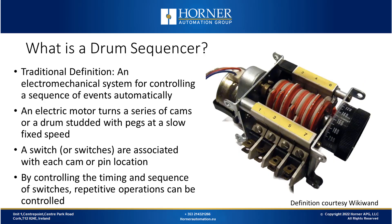The traditional definition of a drum sequencer is an electromechanical system for controlling a sequence of events automatically. Electromechanical drum sequencers consisted of an electric motor which turned either a series of cams or a drum studded with pegs, turned at a consistent slow speed. As the cam or drum turned, a series of switches were associated with each cam or pin location, and by controlling the timing and sequence of the switches, repetitive operations could be controlled.